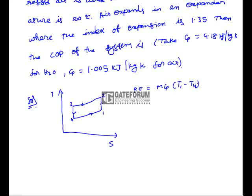Net work done comes from work done by the turbine (expansion process) minus work done on the compressor. Work done in the expansion process = N2/(N2−1) · R · (T3−T4), where N2 is the index of expansion. Work done on the compressor = N1/(N1−1) · R · (T2−T1), where N1 is the index of compression.